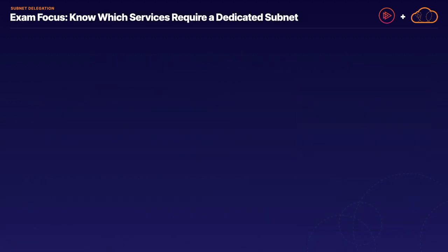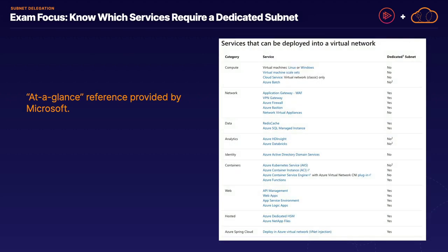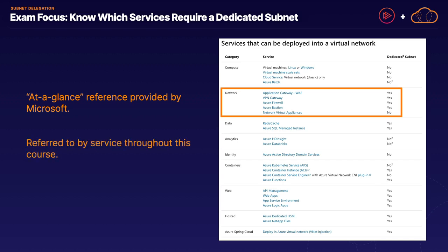Before we move on to our demo, you need to be aware that there's a specific exam focus in which you are expected to know which managed services — specifically networking services — require their own dedicated subnet. Fortunately, you do not have to fish around for this information. Microsoft actually provides a handy at-a-glance reference in which they list a number of different managed services and tell you whether or not each requires a dedicated subnet. The network category includes Application Gateway, VPN Gateway, Azure Firewall, Azure Bastion, and Network Virtual Appliances, and the reference shows whether or not they require a dedicated subnet. We will attach a link to that resource with this lesson so you can refer to it on your own.